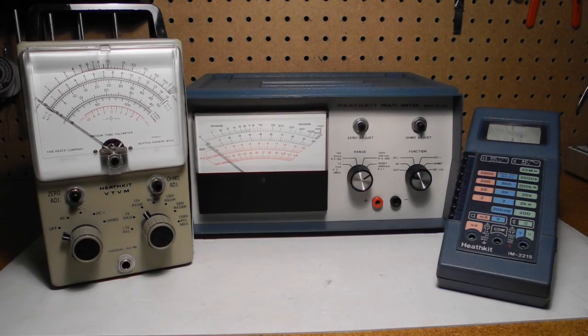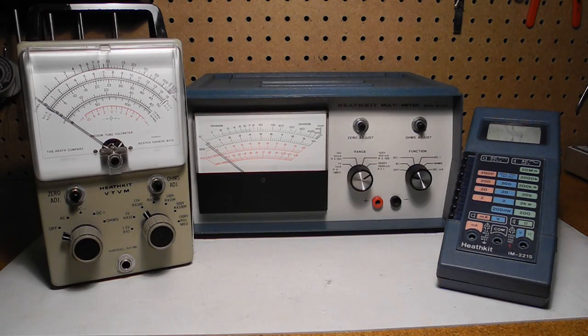A multimeter is an electronic instrument that can measure a number of different electrical values, typically voltage, current, and resistance. One of the simplest types is the volt-ohm milliamp meter or VOM, which is just an analog meter with appropriate switching for different measurement modes and ranges.